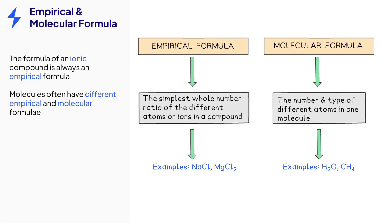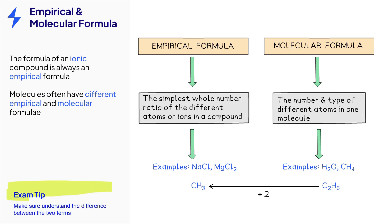For example, a molecule of ethane contains two carbon atoms for every six hydrogen atoms, giving it the molecular formula C2H6. Dividing the number of atoms by two gives the simplest ratio, and its empirical formula is CH3. Make sure you understand the difference between the two terms.